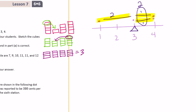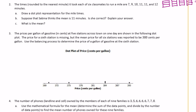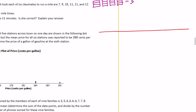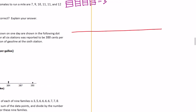Number two: the times rounded to the nearest minute it took each of six classmates to run a mile are seven, nine, ten, eleven, eleven, and twelve minutes. Draw a dot representation for the mile times. So we have one seven, one nine, one ten, two elevens, and a twelve.